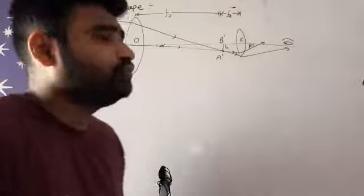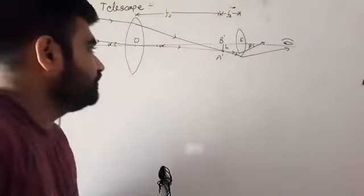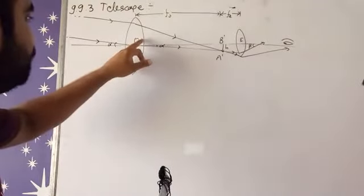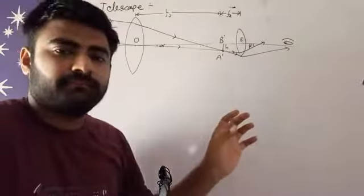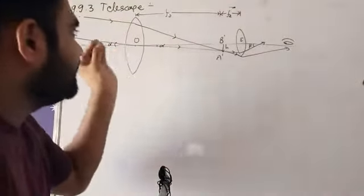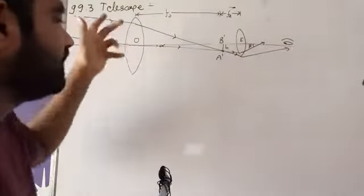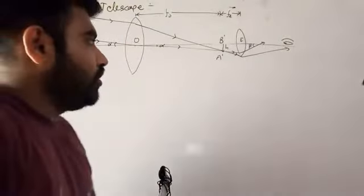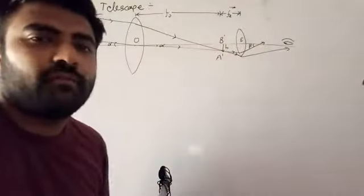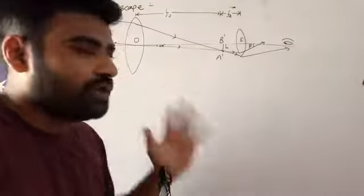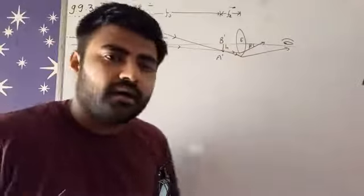We know that the object is at infinite distance. So infinite distance from the first ray which comes, the lens on which it will strike, that lens will be our objective. And from where we observe, that side lens will be our eyepiece. Both will be convex lenses.